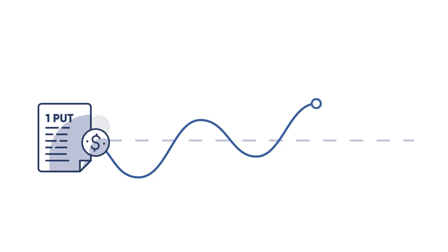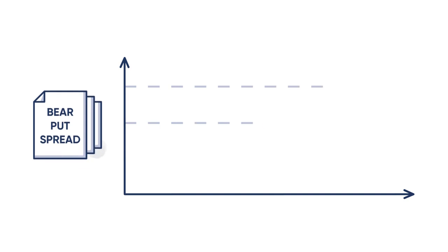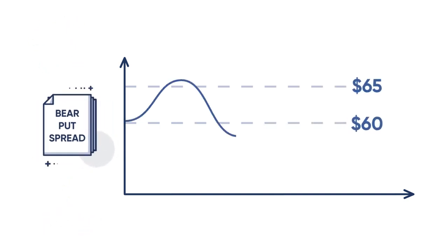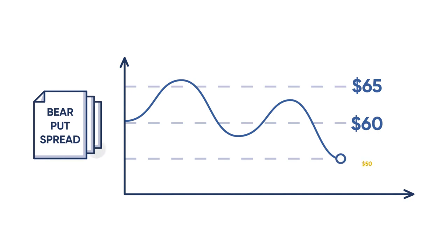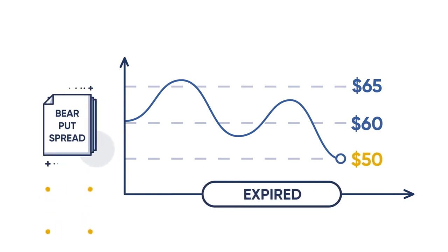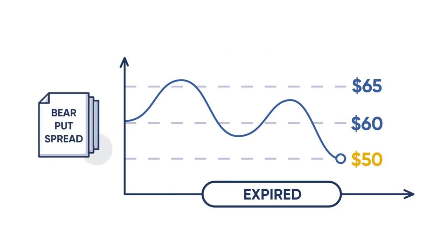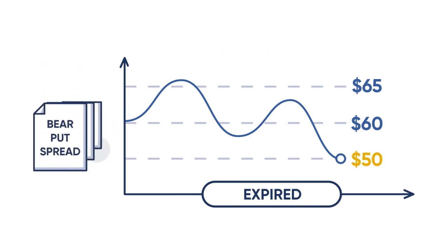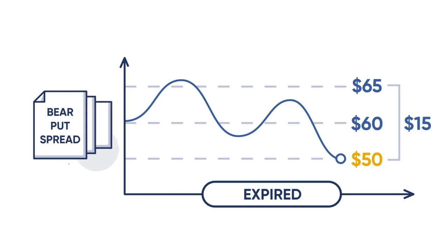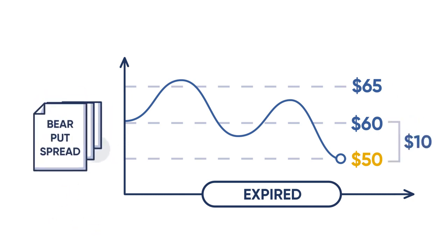What XYZ does will determine whether you are profitable or not. Let's look at the various outcomes with the stock at expiration. Suppose that you are right on your forecast and XYZ drops to $50 per share at expiration. With the stock at $50 at expiration, your long 65 strike put is appreciating and is worth $15, and the short 60 strike put is now worth $10.